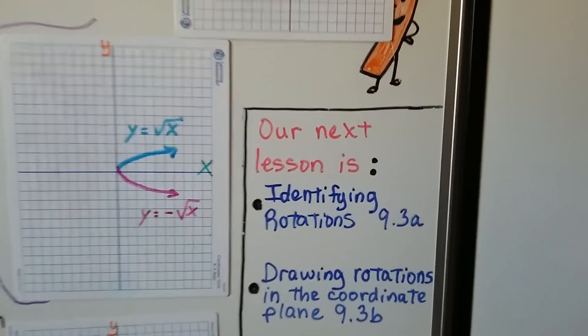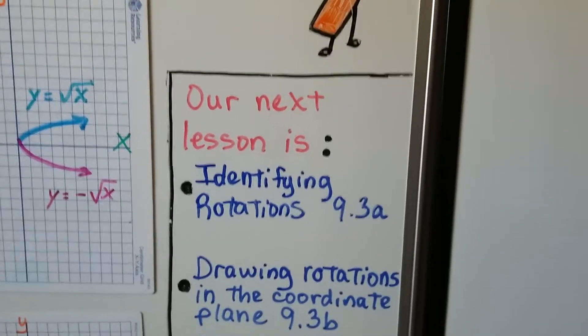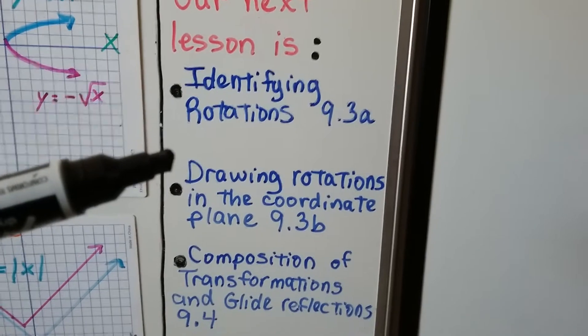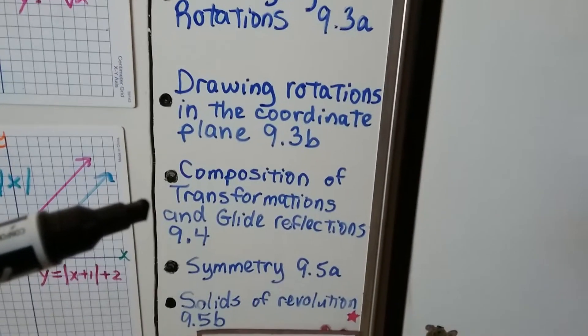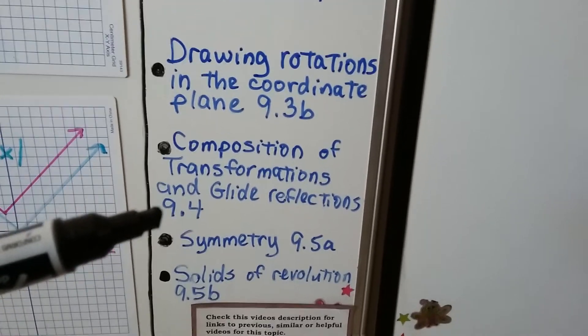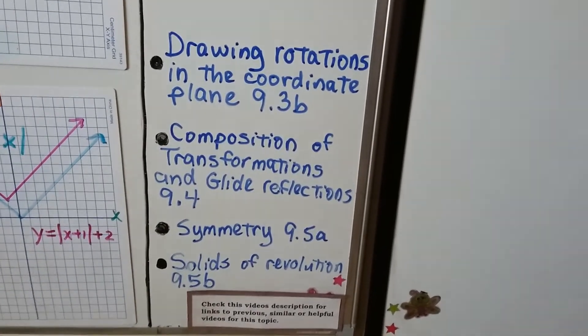So our next lesson is 9.3 and we're going to be starting with identifying rotations, then we're going to draw rotations in the coordinate plane, then we're going to go on to composition of transformations and glide reflections and symmetry and solids of revolution.